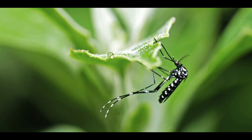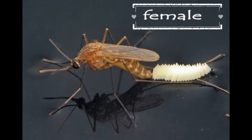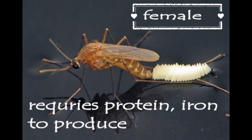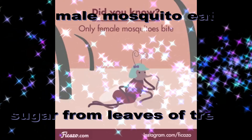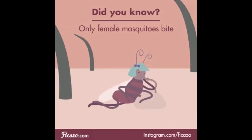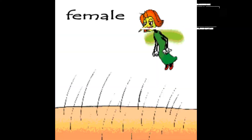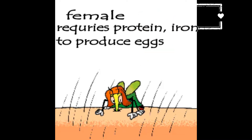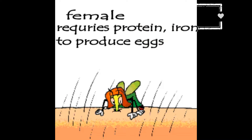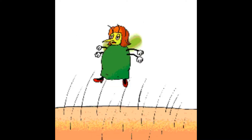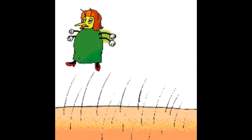Apart from that, in order to produce eggs, a female mosquito requires proteins and iron which are present in the blood. Do you know? Female mosquitoes only bite. The reason is, in order to produce eggs, female mosquitoes require proteins and iron which are present in our blood. Therefore, the mosquito bites us and sucks blood.